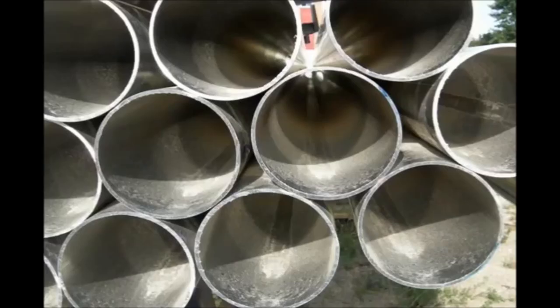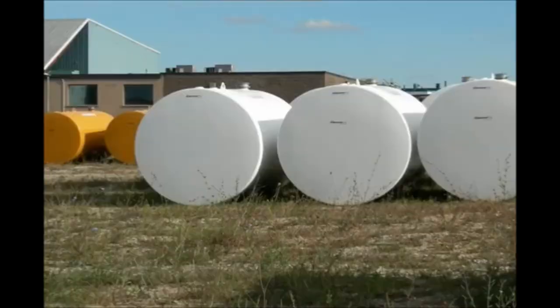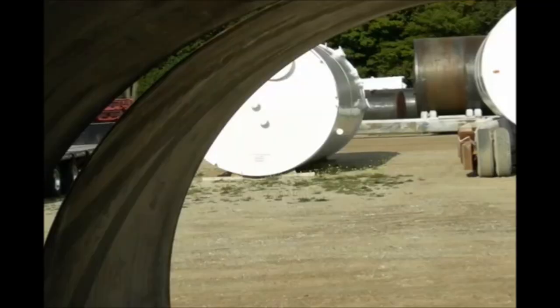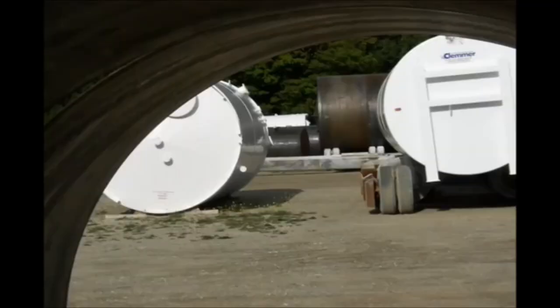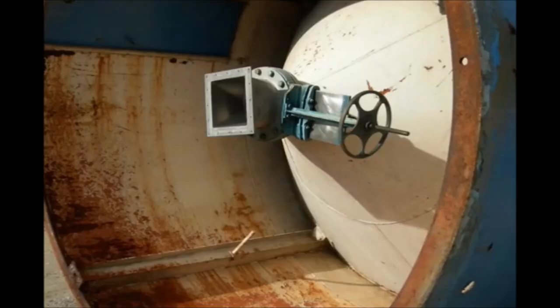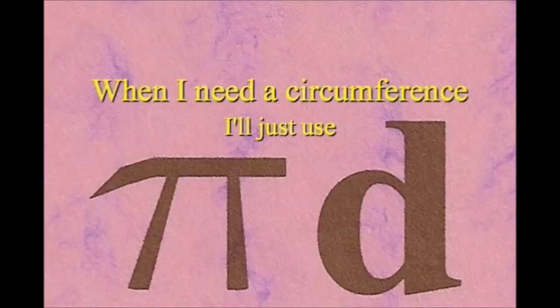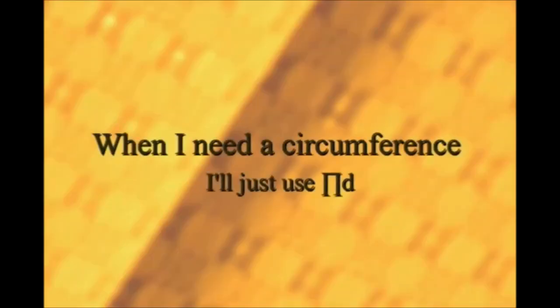And its diameter's a line that goes from side to side while passing through the center, now isn't that simple. Pi r squared sounds like area to me, when I need a circumference, I'll just use pi d.